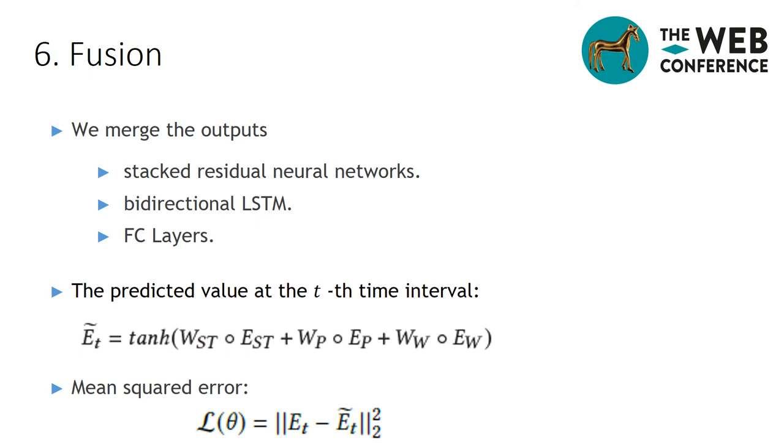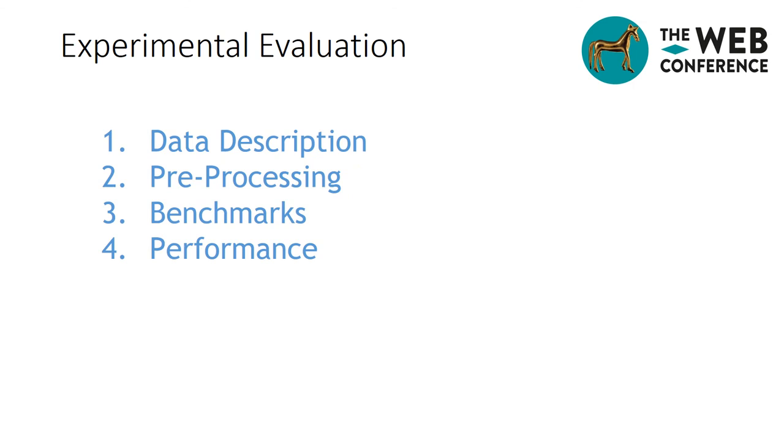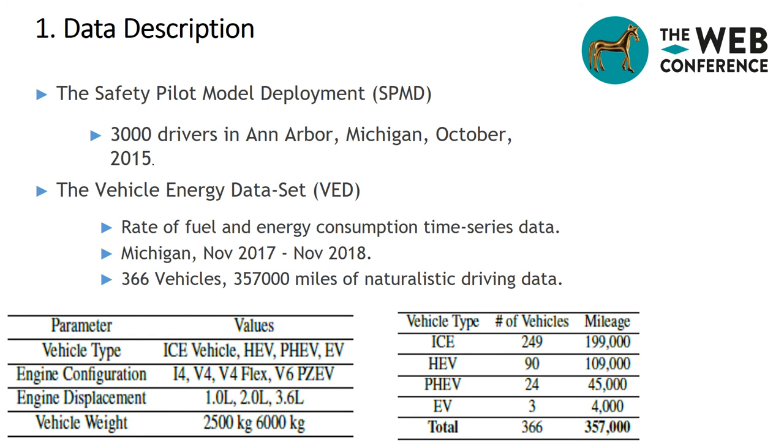For prediction, our model can be trained by minimizing mean squared error between the predicted energy consumption matrix and the true energy consumption values. In the following, we present our experimental evaluation. In our experiment, we use two datasets: the SPMD dataset that contains the driving records of 3,000 drivers in Ann Arbor and the VED dataset that provides the rate of fuel and energy consumption time series data of various personal cars operated in Michigan, USA over a year.